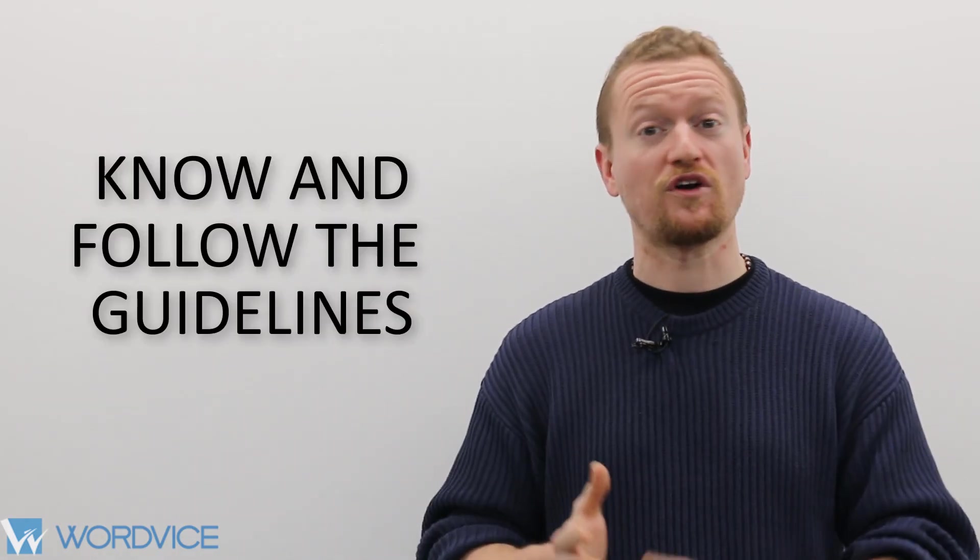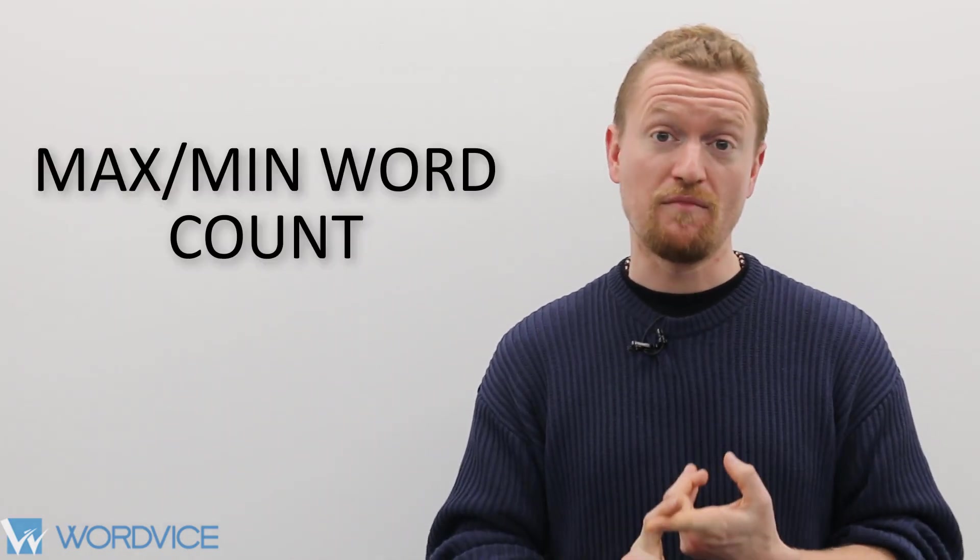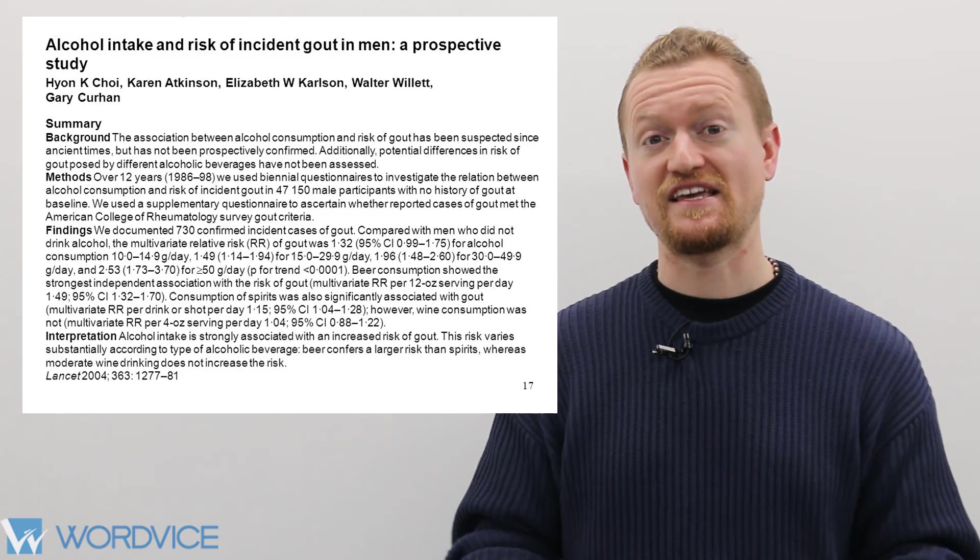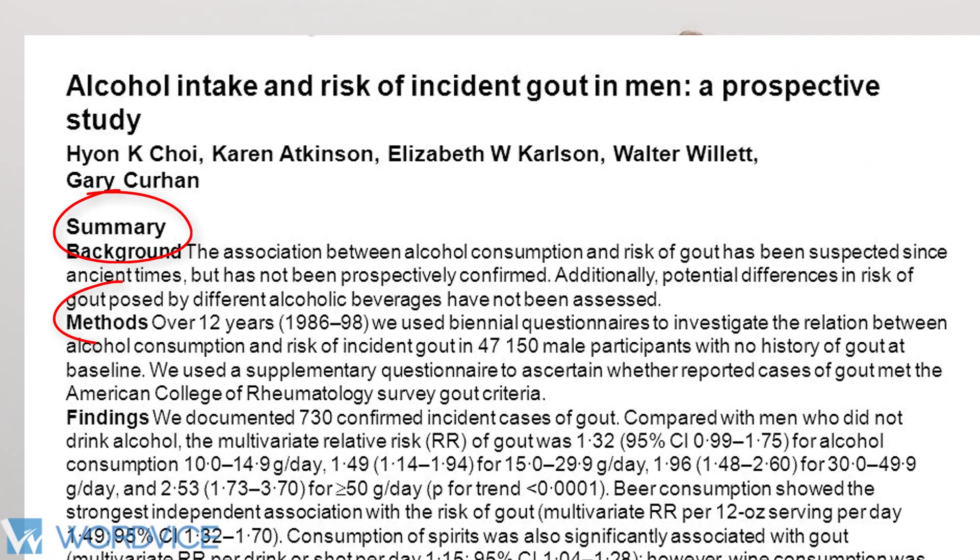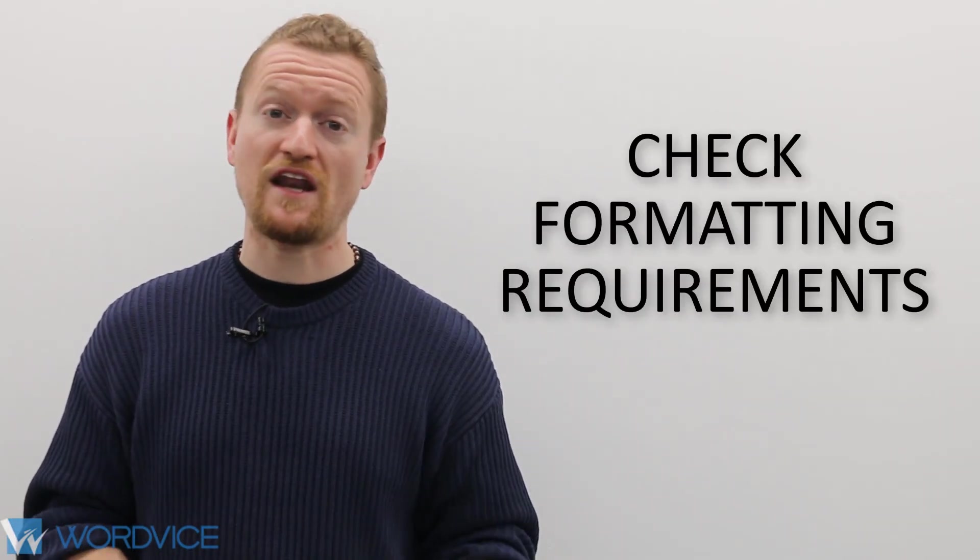You also want to make sure you research all of the guidelines for the journal or conference to which you're submitting before you write the abstract. Ask questions about the maximum or minimum word count. Ask is your abstract structured or unstructured. A structured abstract has explicit headings that show which part of the abstract you're writing, whereas an unstructured abstract does not. You also want to be sure of any specific formatting requirements that the journal or conference will have.